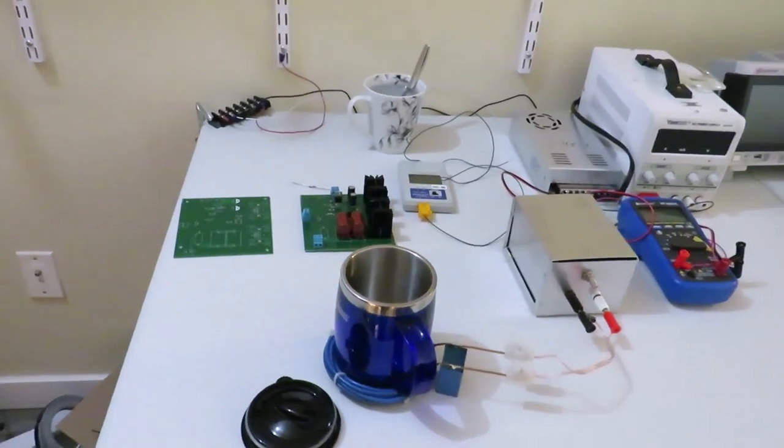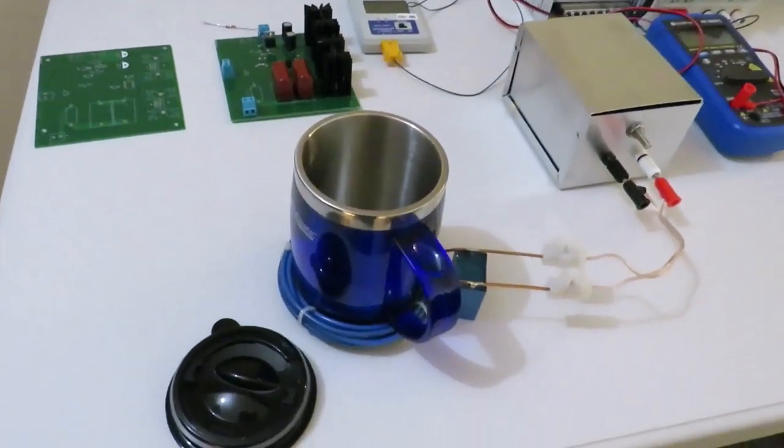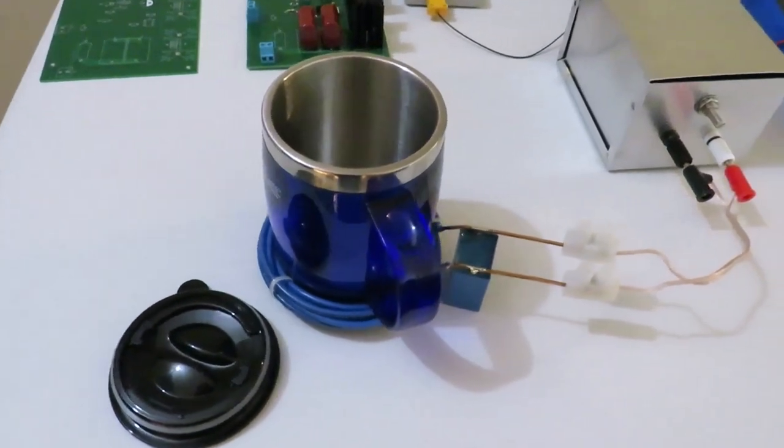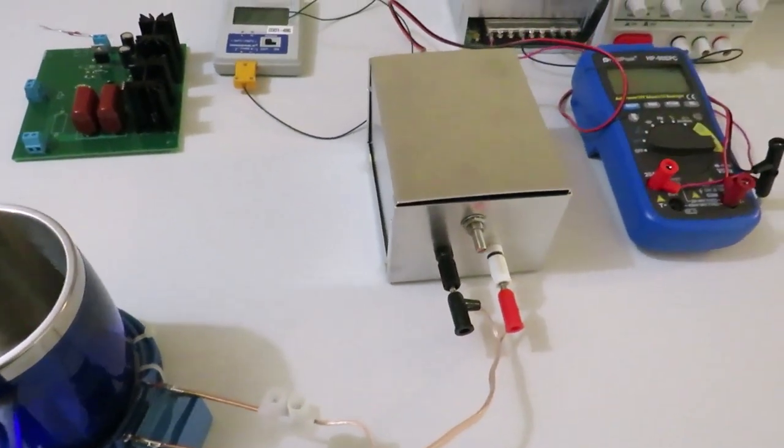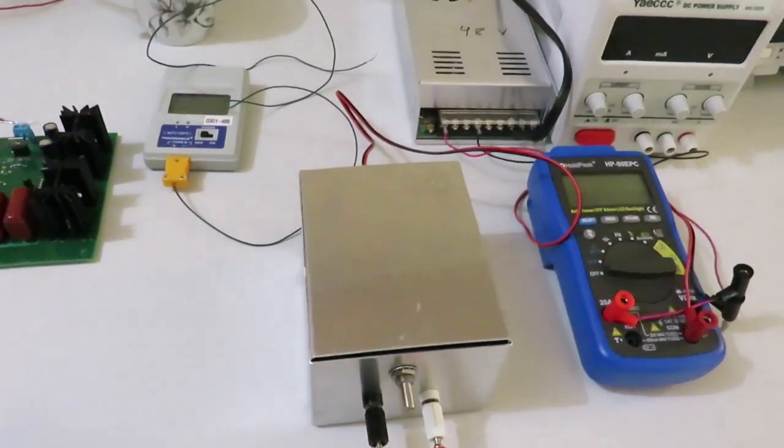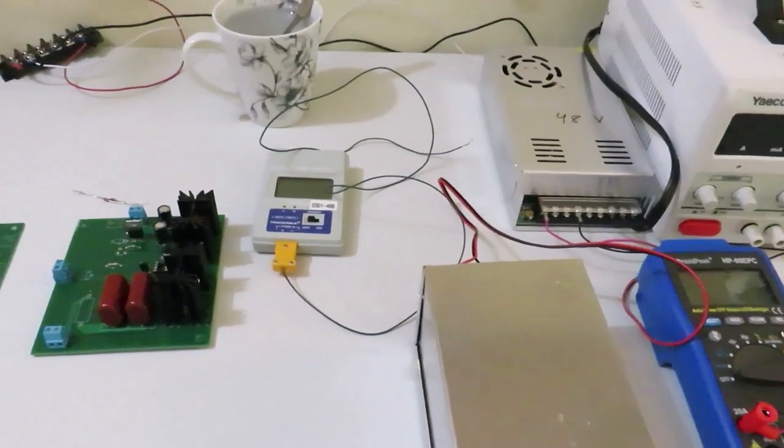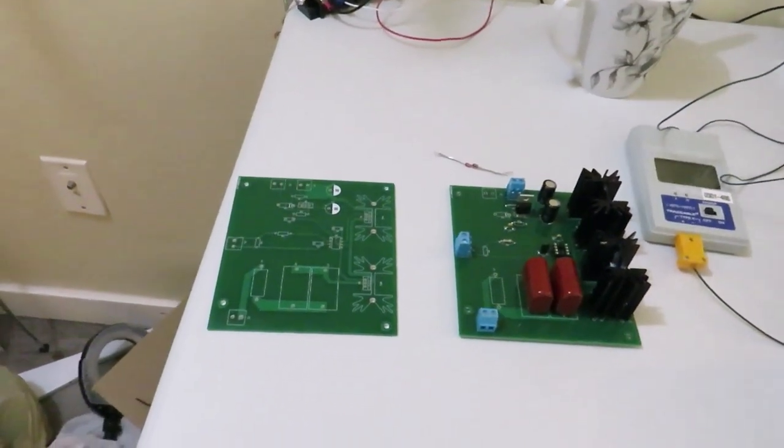The inductively heated coffee mug warmer parts are shown here. This is the coffee mug which will be used to heat inductively. This box contains all the electronics, and this is the PCB which is residing in the box.